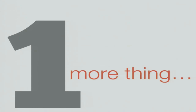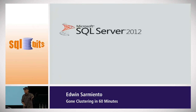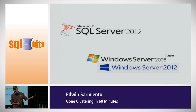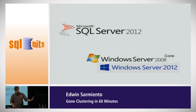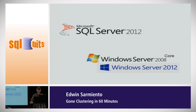SQL Server 2012 also supports multi-subnet clusters out of the box — three-node clusters with two nodes in production and one in DR without needing stretched VLANs. Windows Server 2008 started the concept of Windows Server Core, and SQL Server 2012 can now be installed on Windows Server Core, meaning fewer Windows patches are needed, higher availability, and Windows administrators can't accidentally break something they can't see.